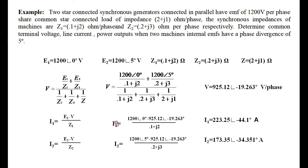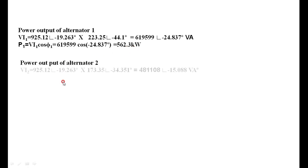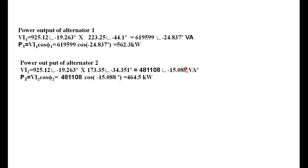The load shared by alternator 2 in terms of current is obtained. If you want power, the power output of alternator 1 is V·I1·cos(φ1), giving 562.3 kilowatts. Similarly, the power output of alternator 2 is V·I2·cos(φ2), giving 464.5 kilowatts. This is how you solve problems on load sharing between two alternators.